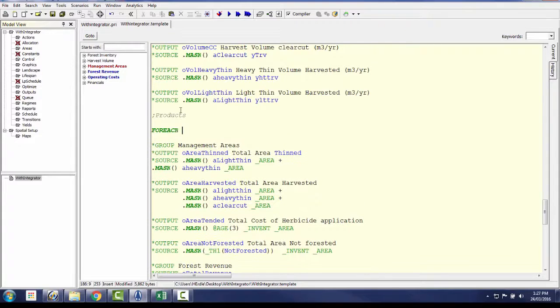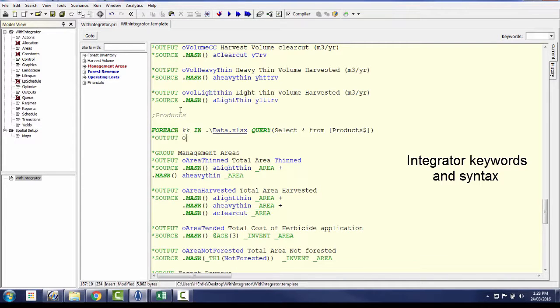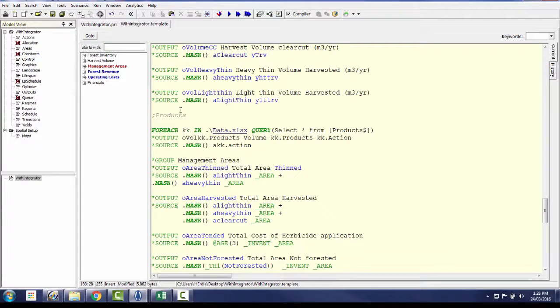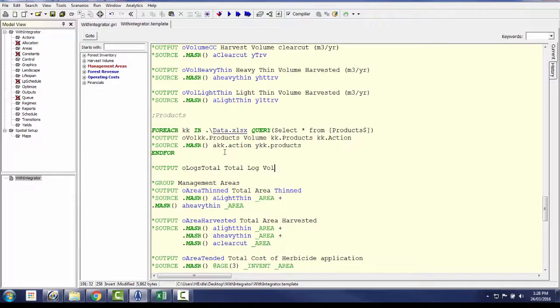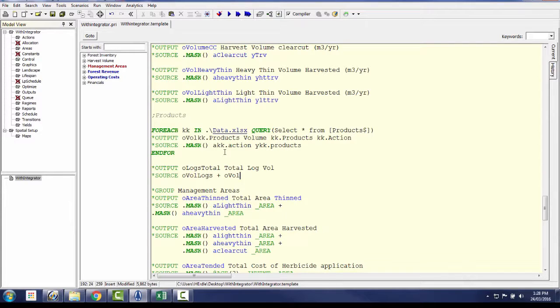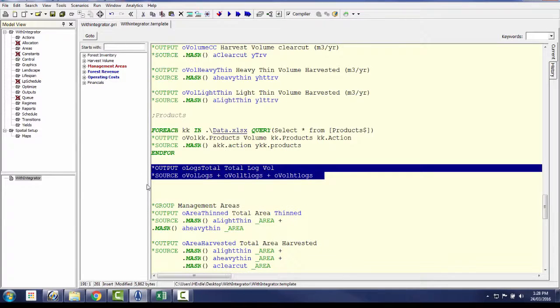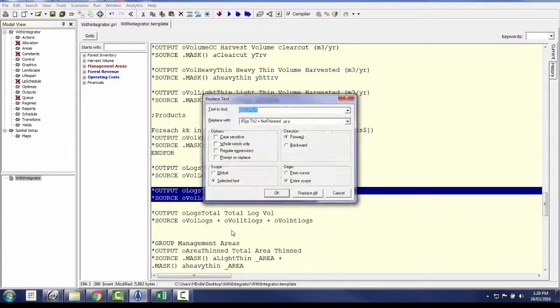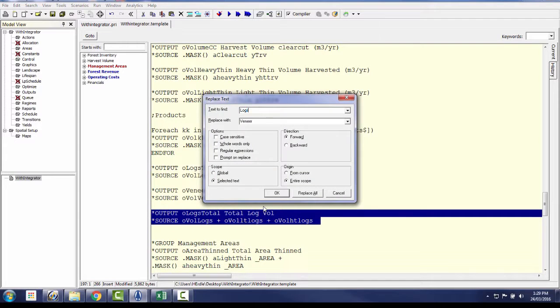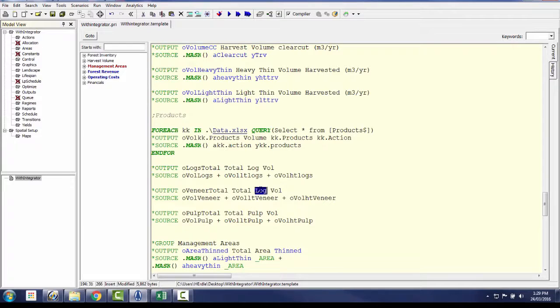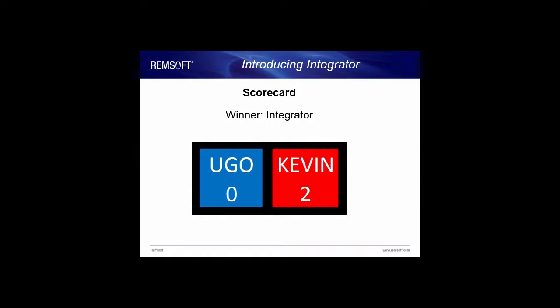Using for-loop syntax and linking the model to an outside data set, Kevin is able to construct the nine product outputs using just three lines of command. He then moves on to build the product total outputs. Kevin now updates the output section with his changes on the template. He completes the process in 2 minutes and 10 seconds. Let's update the scoreboard. Another win for Kevin and the integrator.